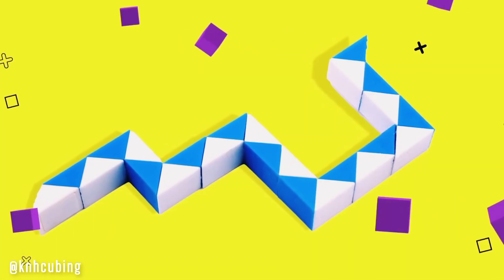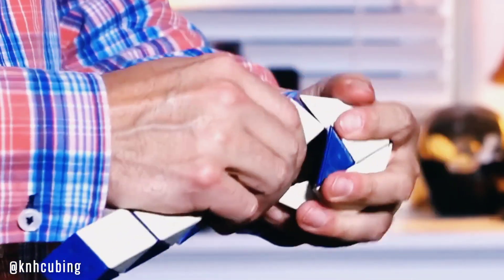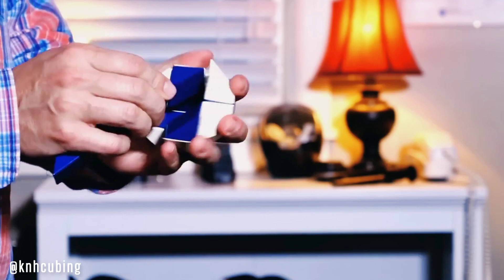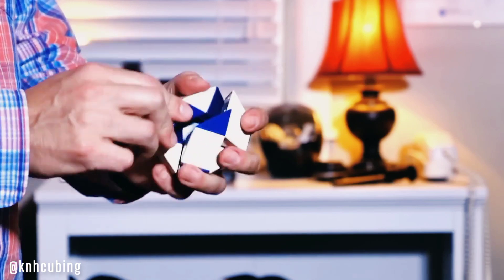Have you heard of a Rubik's snake? After the cube, Rubik kept producing toys. Unfortunately, nothing could beat the success of the cube. But this snake is also quite popular and you can twist it around to produce different shapes.